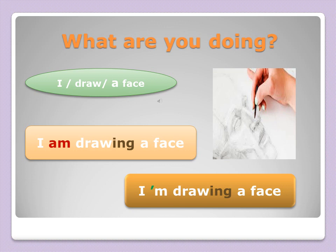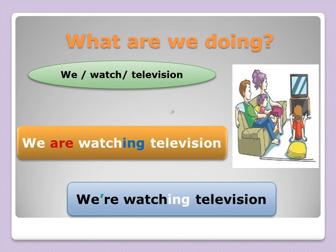Here is another example: what are we doing? We watch television — so we are watching television. We add 'ing' to the verb 'watch' plus the auxiliary 'are', which is the verb 'to be' in the simple present.